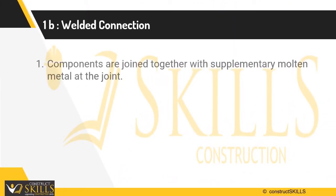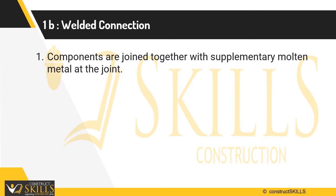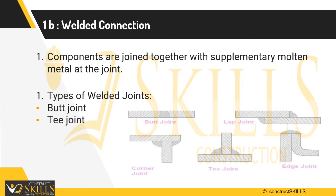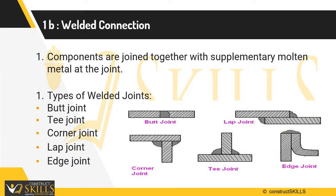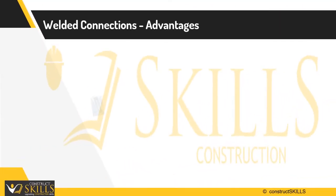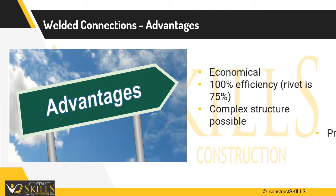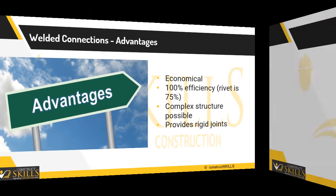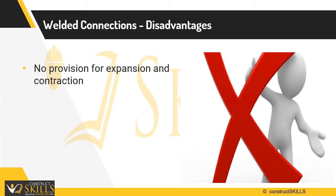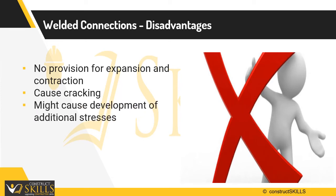Welded joints are connections whose components are joined together when heated and fused, with supplementary molten metal at the joint. Welded connections have the primary advantage of being simple in design, requiring fewer parts and material. Different types of welded joints are butt joint, T-joint, corner joint, lap joint, and edge joint. Welded connections are an economical way of joining members, with efficiency considered 100%, compared to 75% for rivets and bolts in case of failure. Complex steel structures can be easily made using weld joints as they provide rigid joints. The disadvantage is that there is no provision for expansion and contraction, which might lead to cracking; uneven heating may cause additional stresses, and inspection is more difficult than with bolts.